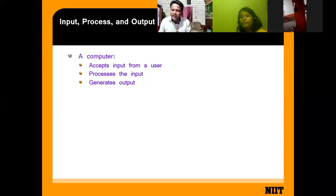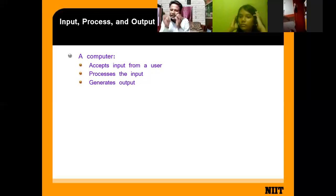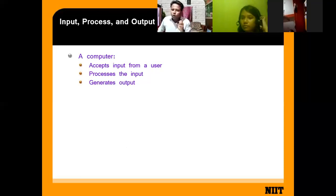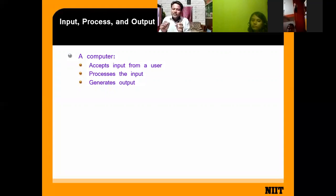For example, you get a bill from a shopping mall. If you keep it, after some months the color fades and you can't read it. But if it is stored as an e-document and you take a photo of that bill, it remains with you for a longer period. For that reason, we use electronic media and computers.